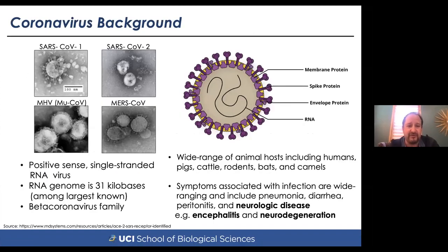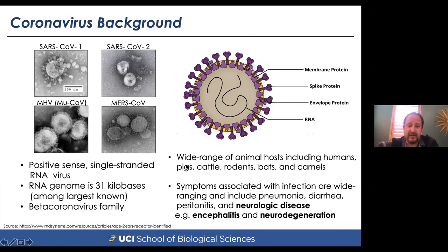Mouse coronavirus is in the same beta coronavirus family as SARS-1, SARS-2, as well as MERS-CoV. Beta coronaviruses are capable of infecting a wide range of animal hosts, including humans, pigs, cattle, rodents, bats, and camels. The symptoms associated with infection can be either benign or more serious, including pneumonia, diarrhea, and peritonitis. Many coronaviruses infect the central nervous system, and this infection can result in neurologic disease characterized by both encephalitis and neurodegeneration.